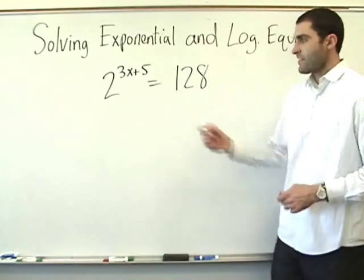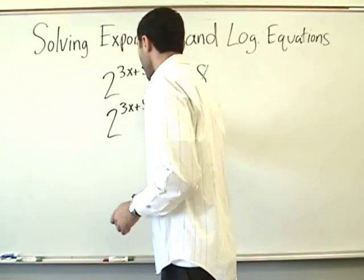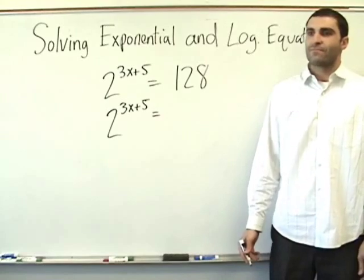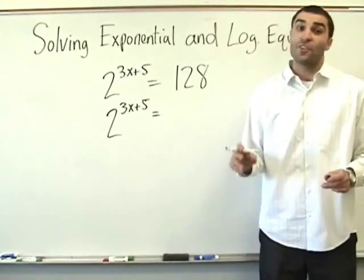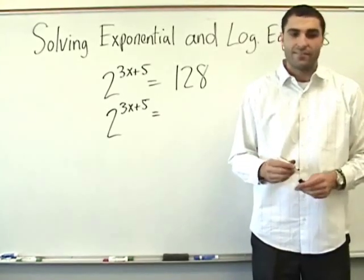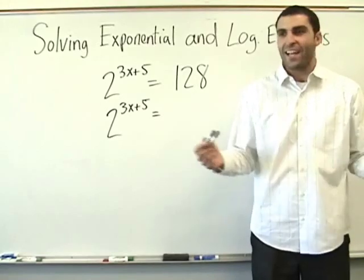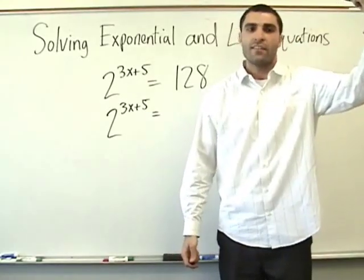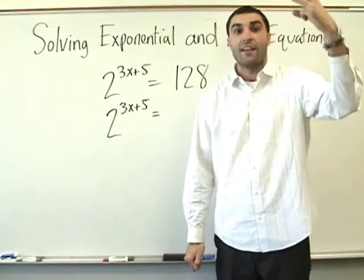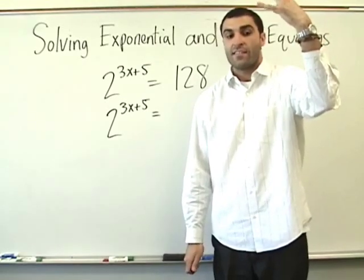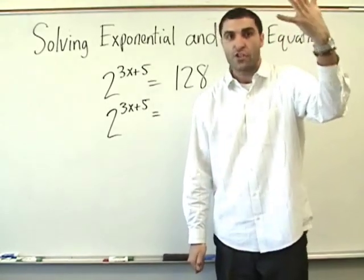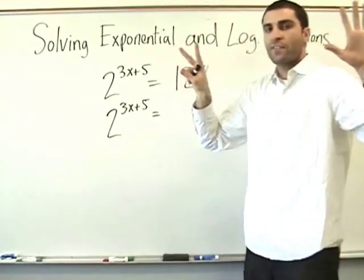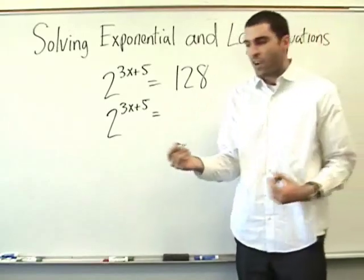Alright, let's rewrite these. 2 to the what is 128? Let's be old school. 2 times 2 is 4, times 2 is 8 — that's 2 to the 3. 2 to the 4 is 16. 16 times 2 is 32. 32 times 2 is 64. 64 times 2 is 128. That's 7 twos. Don't be afraid of a little elbow grease. 2 to the 7.